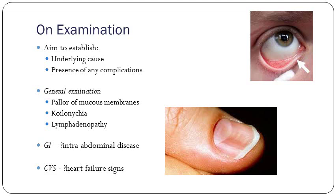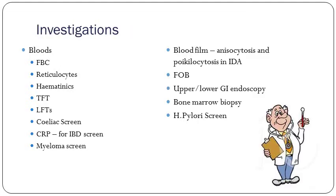On examination: pallor of the mucous membranes in the eye, classic nail signs, any lymphadenopathy as signs of underlying malignancy, GI examination for any abdominal masses pointing to a GI malignancy, or a cardiac exam for signs of heart failure. Investigations: hematinics, thyroid function test, LFTs, a full CXR screen, and a full myeloma screen. In some cases: blood film, fecal occult blood if indicated, upper or lower GI endoscopy, and bone marrow biopsy — all really dependent on the history.